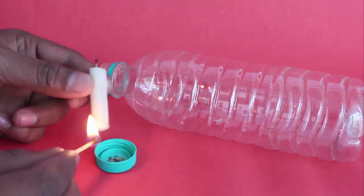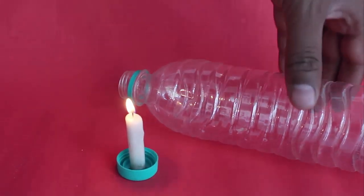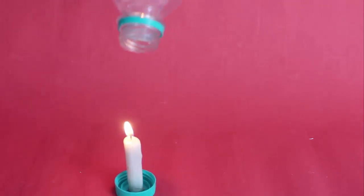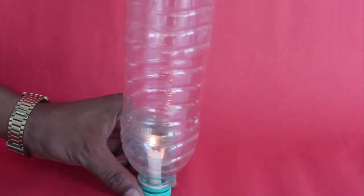First heat the base of the candle to melt it and then fix it in the bottle lid. Then light the candle. Finally invert the empty bottle and screw its mouth on the lid.